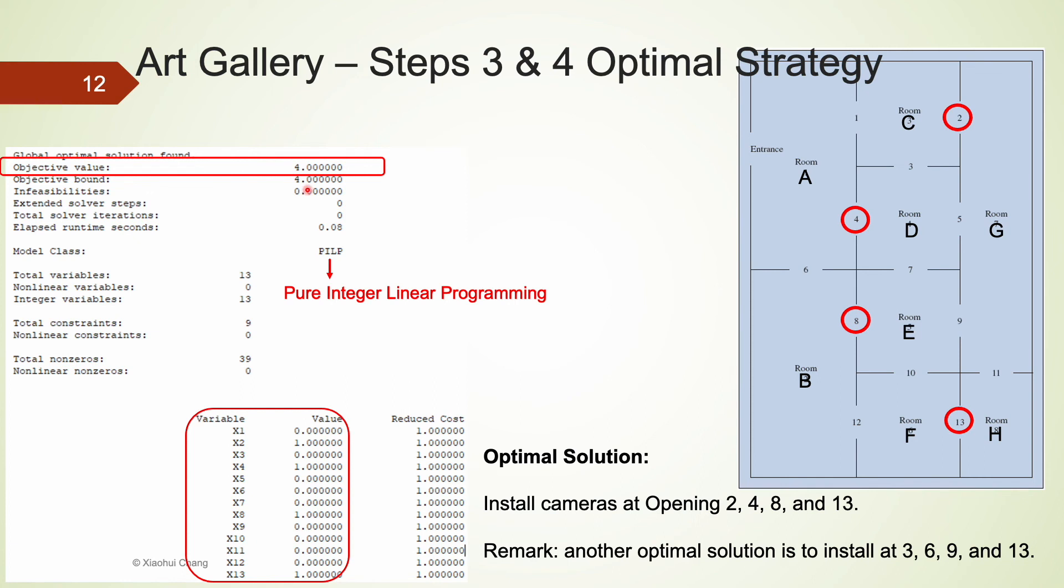The optimal solution for the gallery is to install cameras at openings 2, 4, 8 and 13. There are going to be 4 cameras installed in total. Room A is going to be covered by the camera installed at opening 4, B by 8, C by 2, D by 4, E by 8, F by 13, G by 2, and H by 13 again. All rooms are only covered by one camera, so rather efficiently.